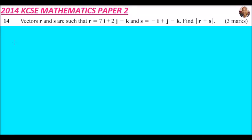Question number 14, that is 2014 Mathematics Paper 2. We are told vectors r and s are such that r equals 7i + 2j - k and s equals -i + j - k. Find the magnitude of r plus s.